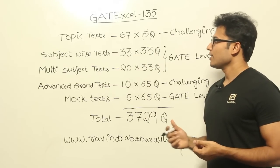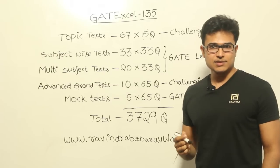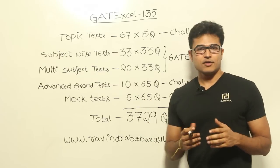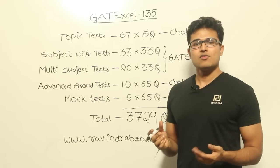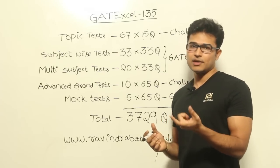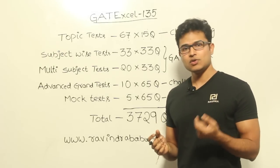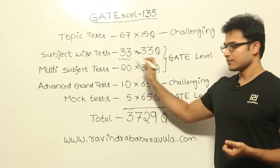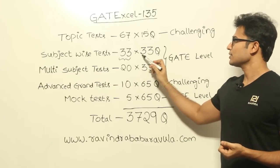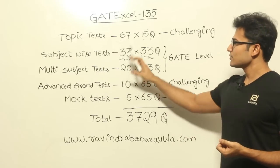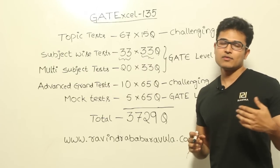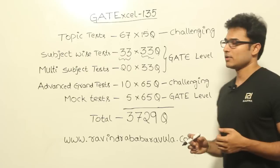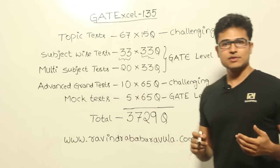The next one is subject-wise test. Subject-wise test means each test will be covering one subject. For example, if you take operating systems, that is a subject, and any test corresponding to operating systems will contain questions only from that subject. We are going to have 33 such tests and each test is going to contain 33 questions. All these questions will be at the GATE level — meaning whatever difficulty you can expect in the GATE exam, you are going to get almost the same level.